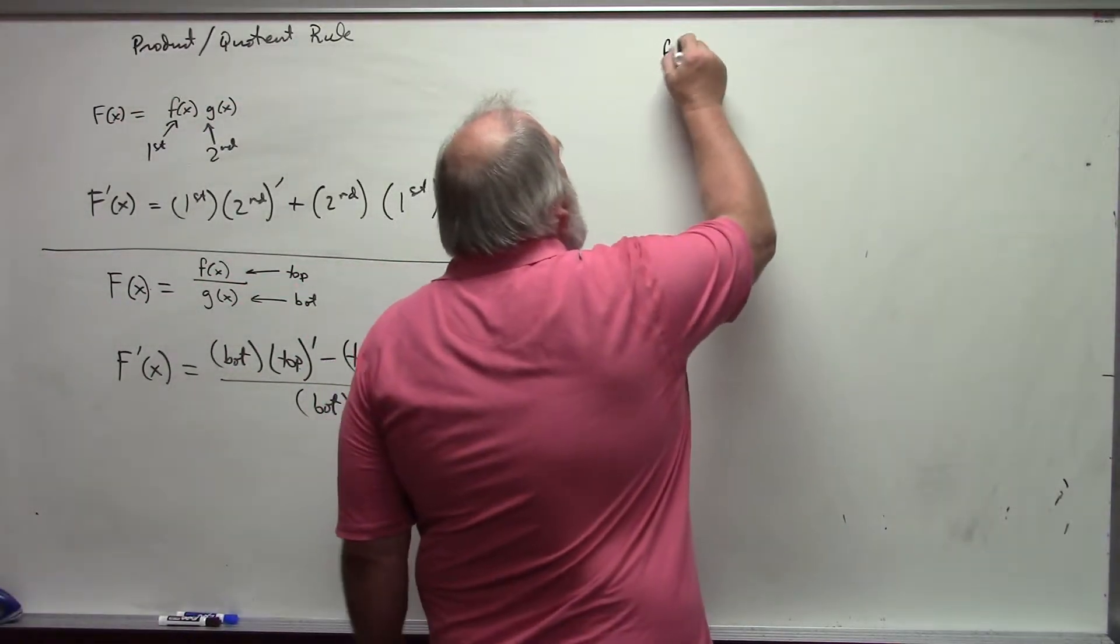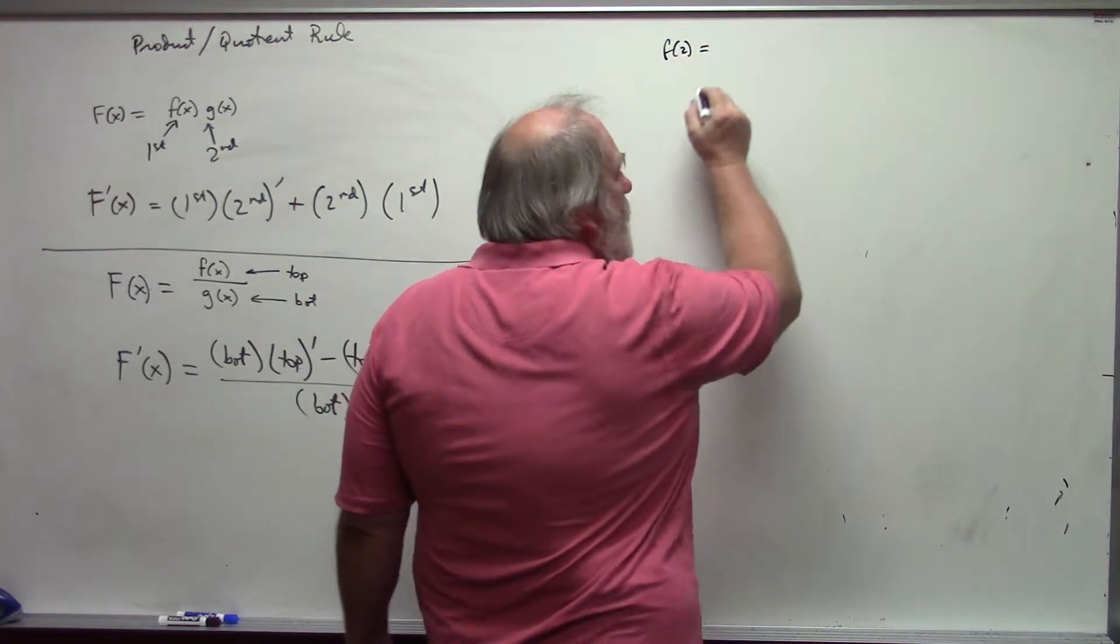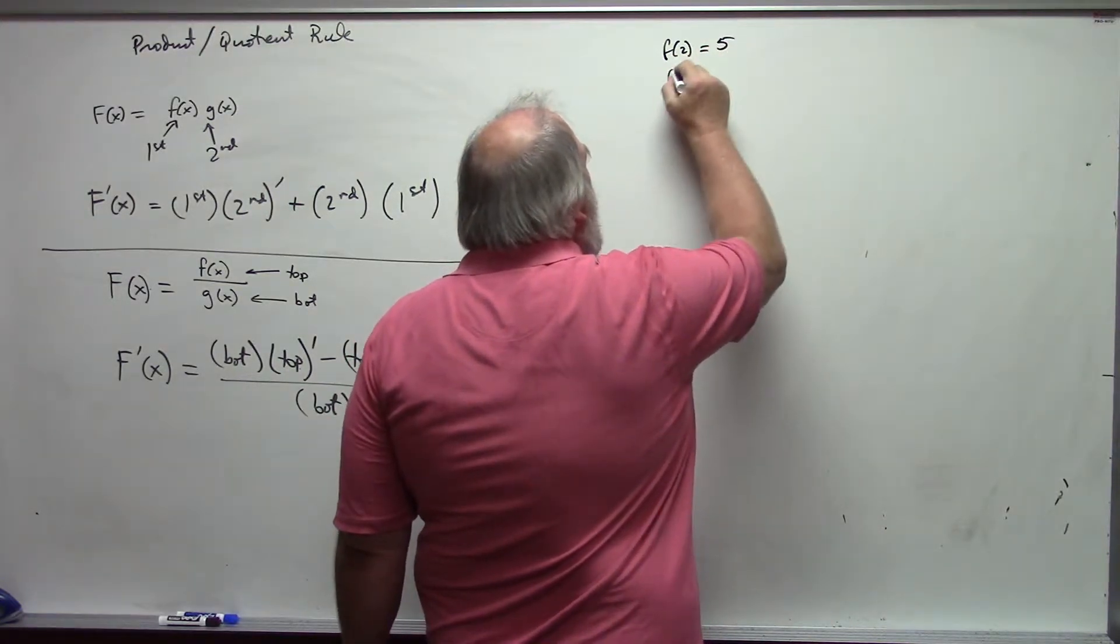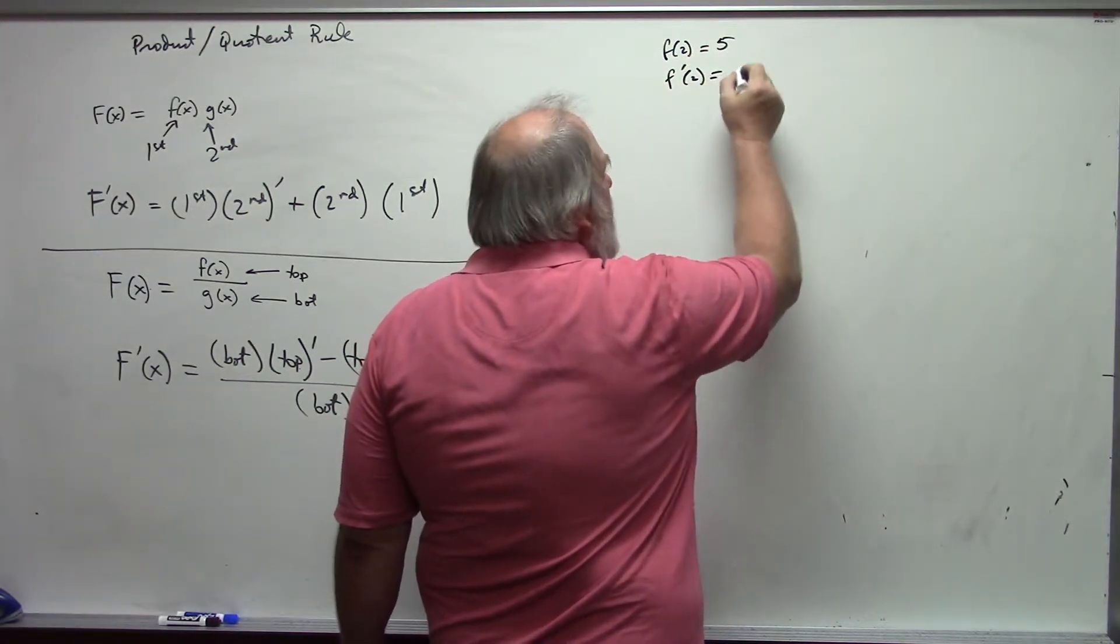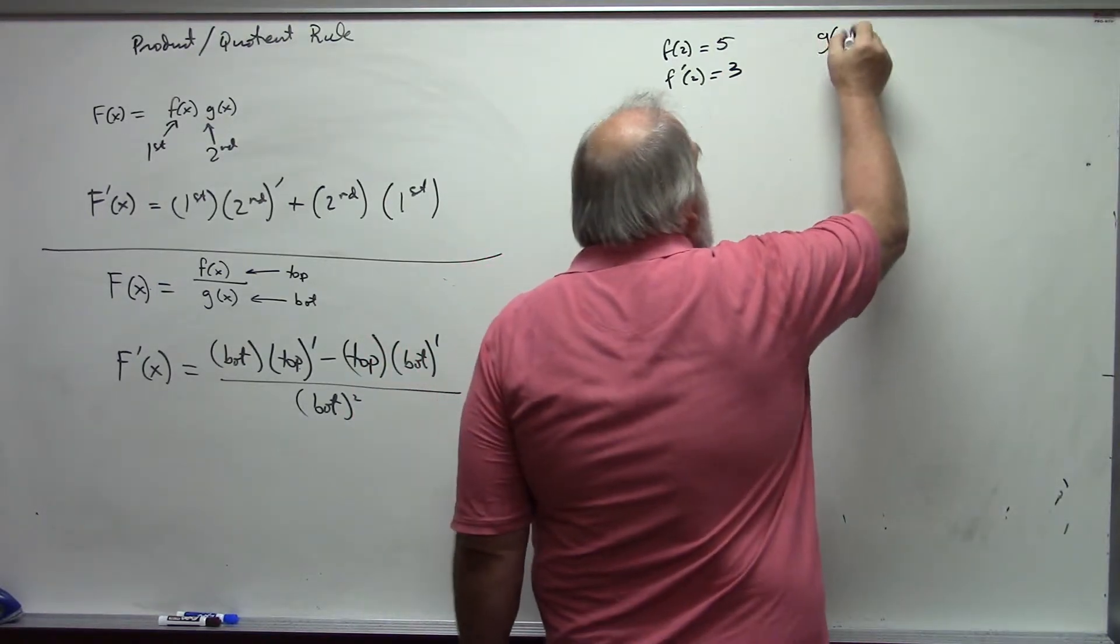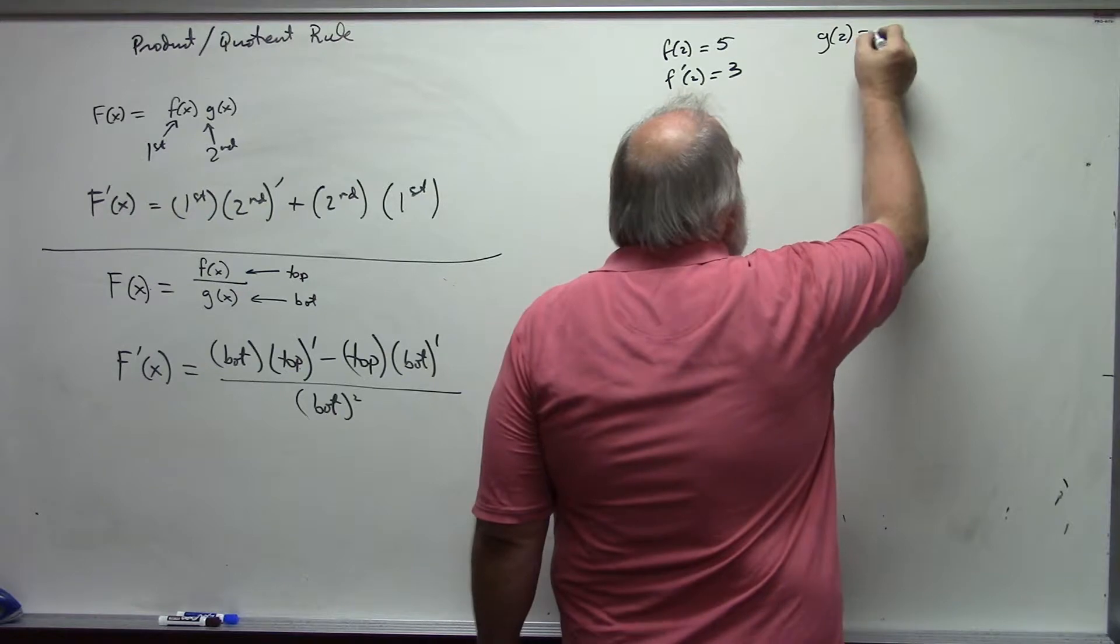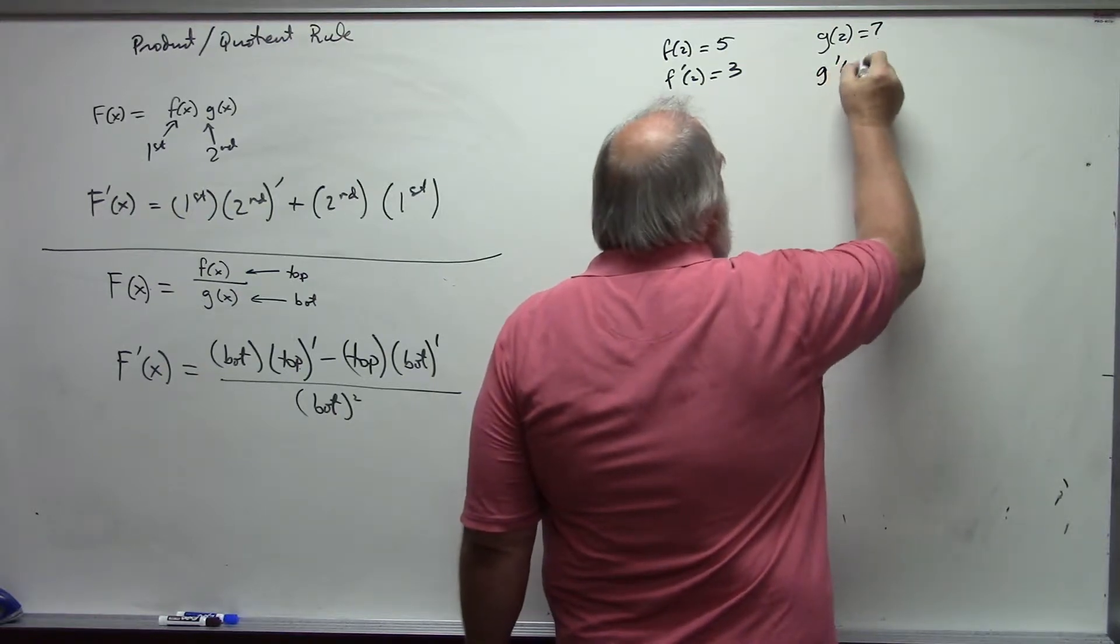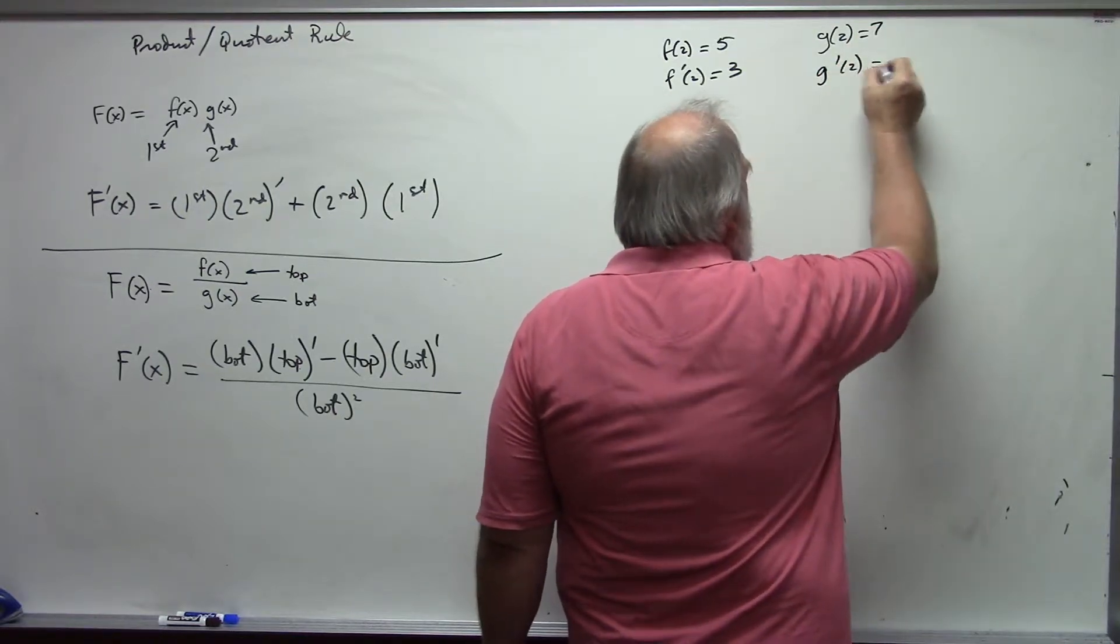Suppose I have f of 2 is equal to 5, f prime at 2 is equal to 3, g of 2 is equal to 7, g prime at 2 is equal to negative 4.